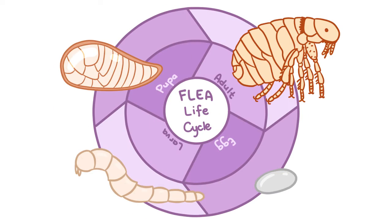Insect growth regulators, however, don't kill adult fleas. Thus, treatment is often combined with adulticides, which are the next few medications I will get to. They kill off fleas at this stage of the life cycle.